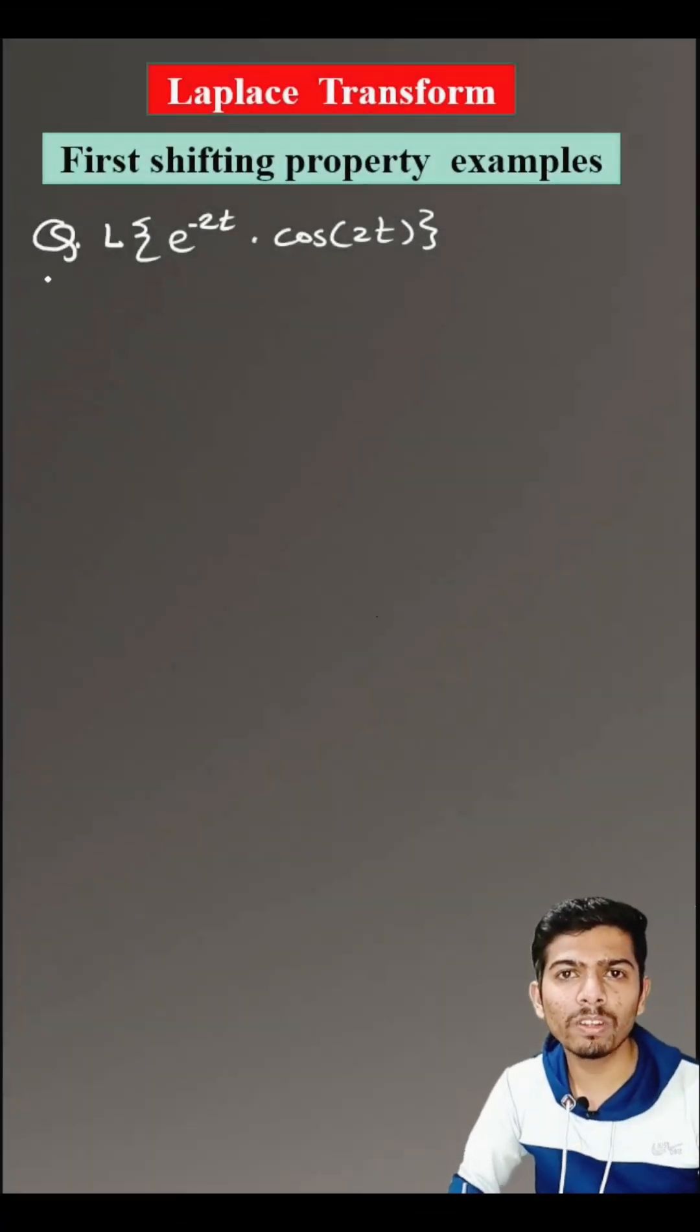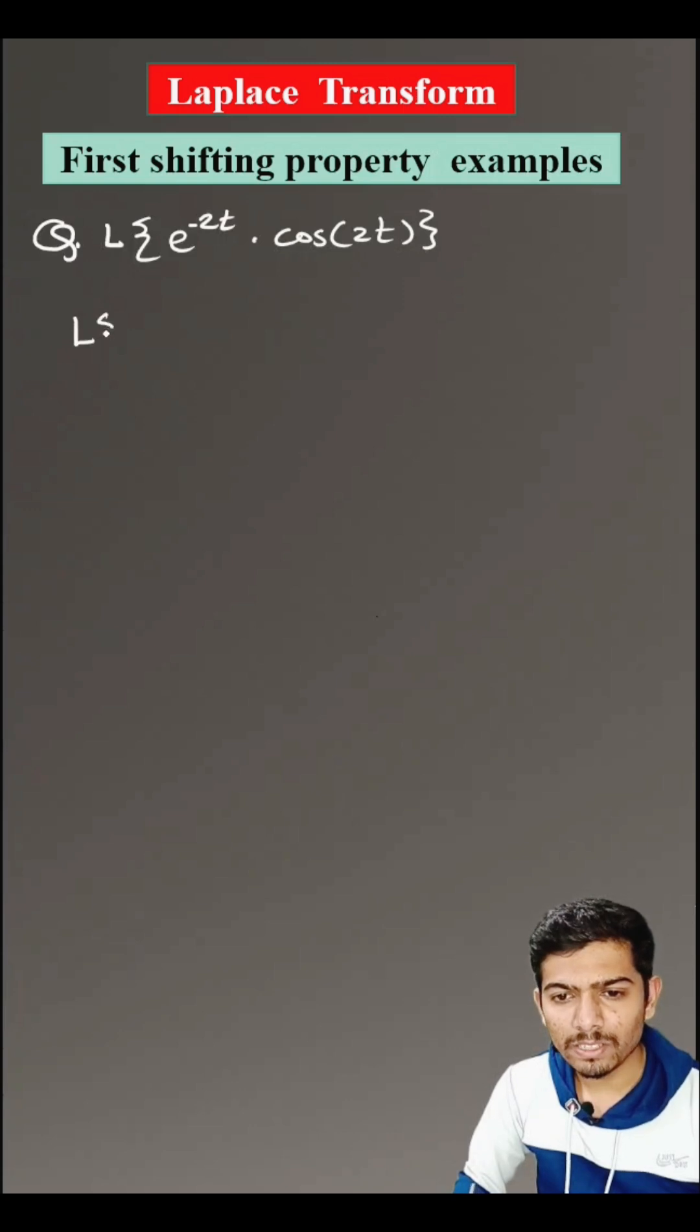Hello everyone, how to solve this example? First of all, we will recall the first shifting property that is Laplace transform of e raised to at into capital F of t is equals to small f of s minus a.